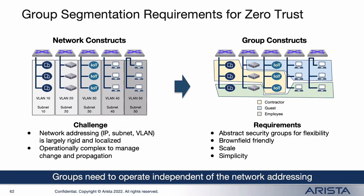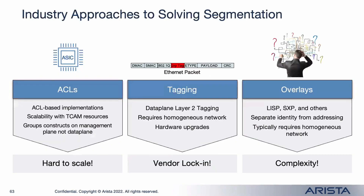Another thing to consider is scale. Traditionally, ACLs are used for enforcement, and they work well, but they have an inherent scalability issue because of limited TCAM resources. As the number of endpoints keeps growing, we start to reach TCAM boundaries. The solution is group-based segmentation: you group endpoints into a certain group, define policies referencing those groups, and you can scale your TCAMs much more efficiently.